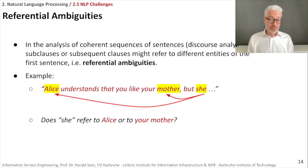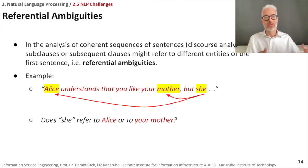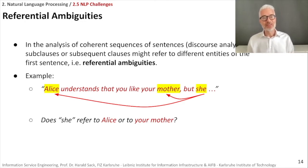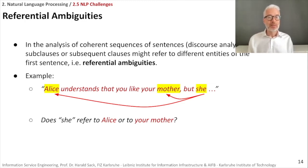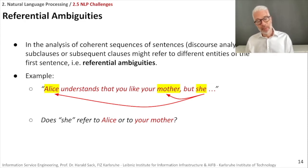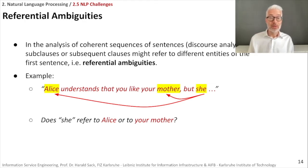Then we have referential ambiguities. Here we do co-reference analysis — analysis of coherent sequences of sentences where sub-clauses or subsequent clauses might refer to different entities of the first sentence. Simple example: 'Alice understands that you like your mother, but she is blah blah blah.' The word 'she' might refer either to Alice or to the mother — that is a referential ambiguity.